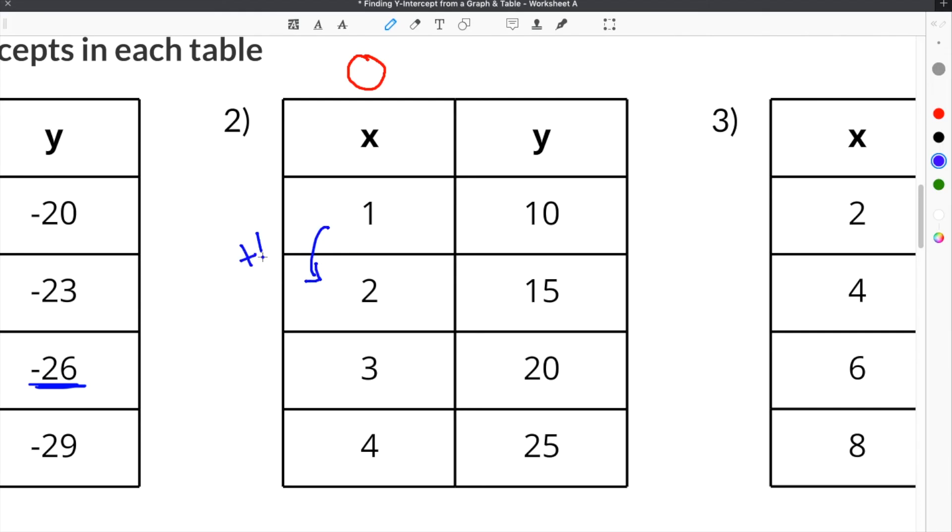So if we go this way, every time we move up a row, we add 1 to the x. So plus 1, plus 1. That means when we go backwards, we're going to subtract 1 from the x. And that will give us x is 0.